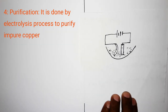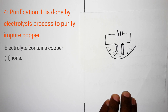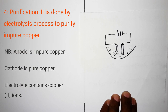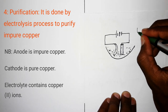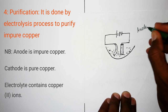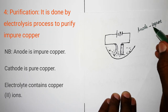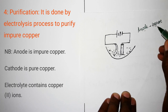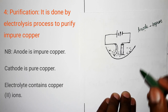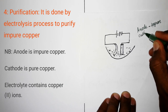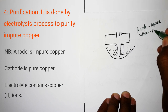This is the setup for electrolysis of impure copper. Generally, when you want to purify an impure substance or element, the anode should be the impure one and the cathode should be the pure one. The trick to remember is: anode = impure, cathode = pure.